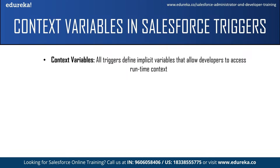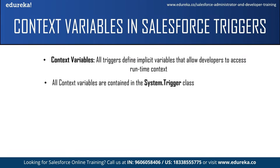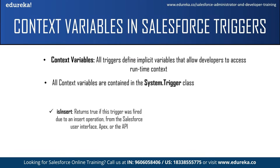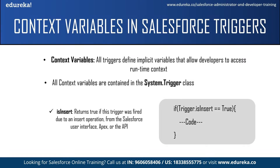Using context variables, we can specify which piece of code we want to run for which particular event, avoiding running all the other pieces of code which are not required for a specific event. Another important point is that all context variables are contained in the System.Trigger class. Now let us take a look at the list of context variables in Salesforce triggers. The first context variable is isInsert. This returns a true value if the trigger was fired due to an insert operation from the Salesforce user interface, Apex, or the APIs.